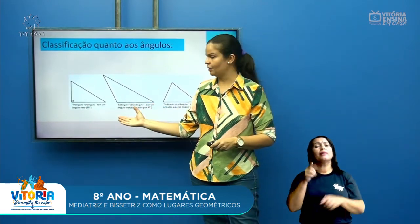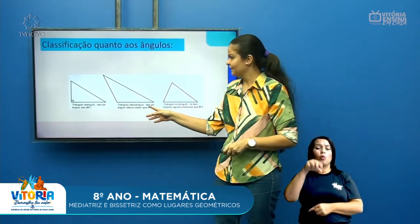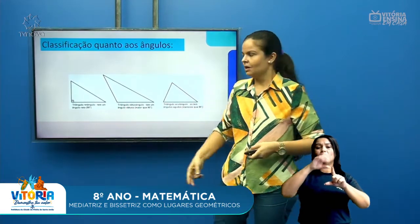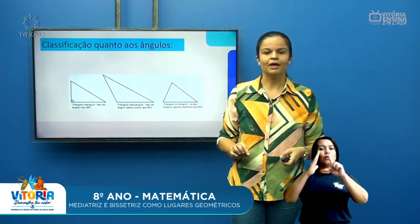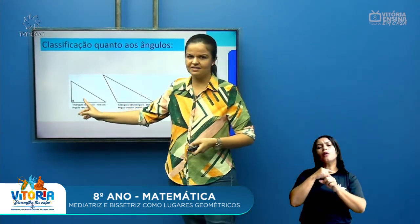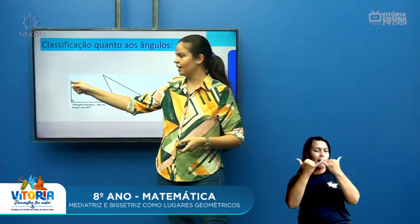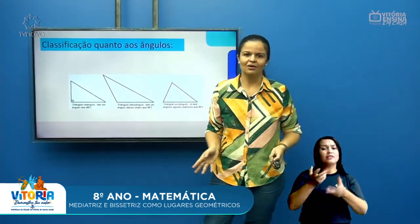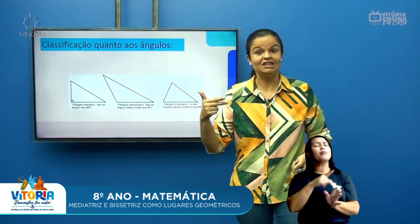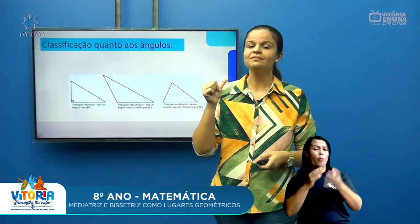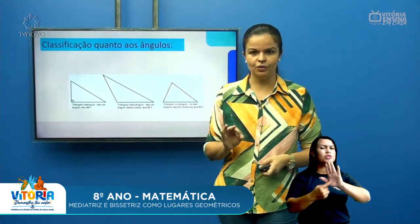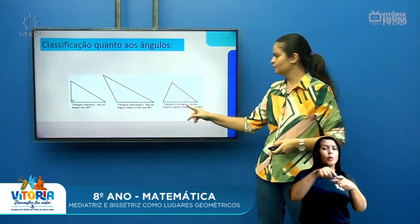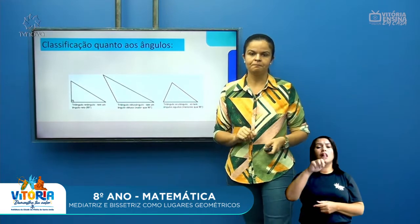No triângulo obtusângulo, um dos lados tem um ângulo maior que 90 graus. Só ao observar, já dá para ver que esse lado é maior do que 90 graus, comparando com o ângulo reto do triângulo retângulo. Para medir os ângulos com precisão, usamos o transferidor. E no triângulo acutângulo, todos os ângulos são menores que 90 graus.